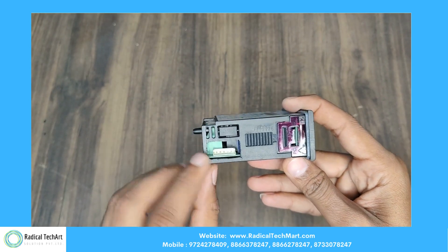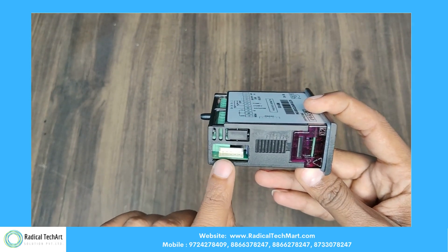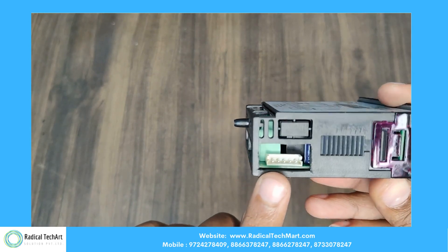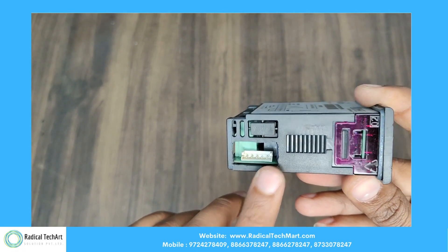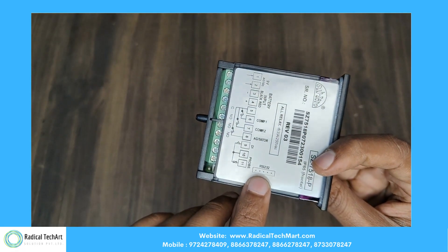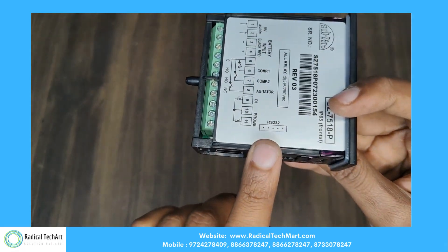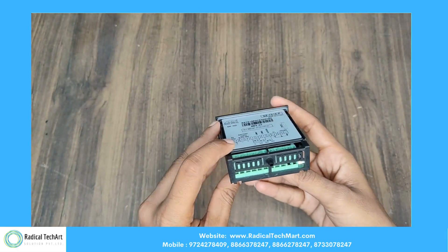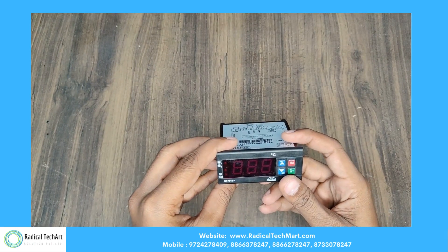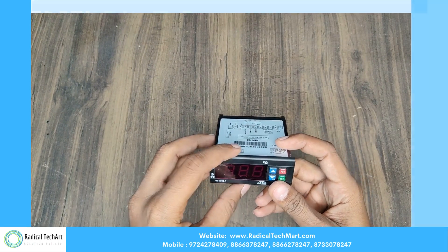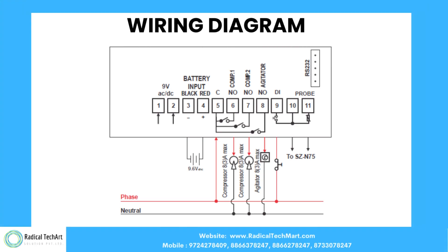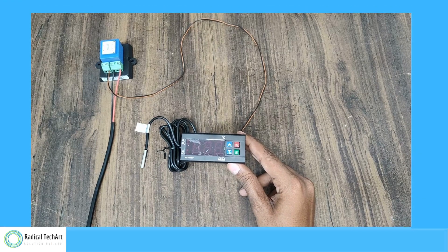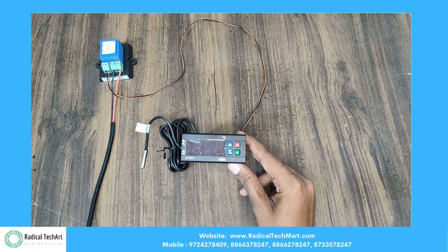Here is the slot for the RS232 Converter. This is the suggested wiring diagram for the Sub-07518P Bulk Milk Cooler Controller. Let's see how it works with all the parameters.